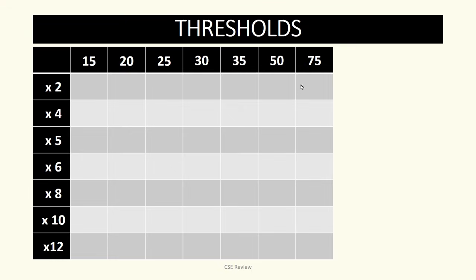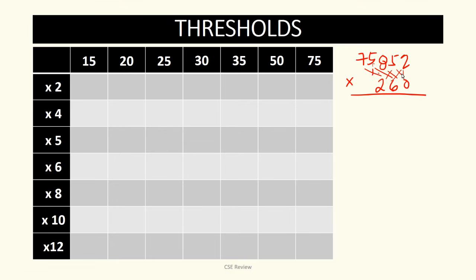There are times when we get questions like 75,852 — big numbers — multiplied by another big number like 20,260. We're going to estimate the correct answer. Just by looking at this, it's complicated the traditional way with layers and layers of multiplication. But if you can estimate, and the answer options have different numbers of digits, that can be a way for you to speed up your answering process.